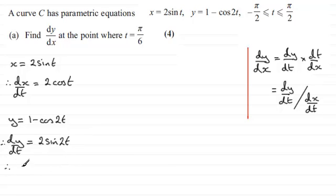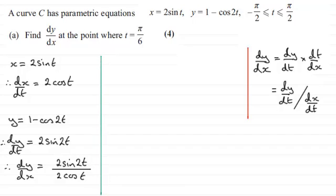So that means that therefore dy by dx is going to equal, and I'm going to pick off this version here for this one. So it's dy by dt which is 2 sine 2t. And this is then divided by dx by dt, which is 2 cos t. Now I could cancel out these two 2s here, leaving me with sine 2t over cos t, and then just carry on and substitute t equals pi upon 6 in. And you'll get the right answer, assuming you don't make any mistakes that is. But I'm going to do it a different way.